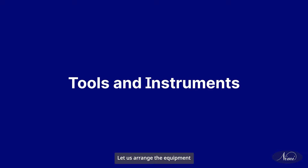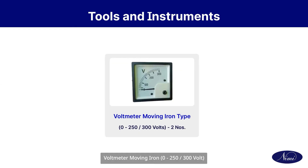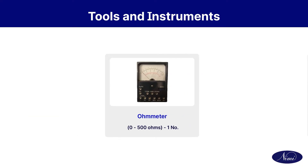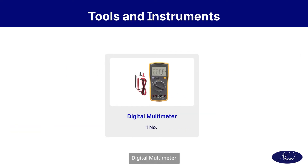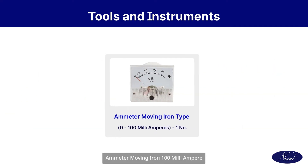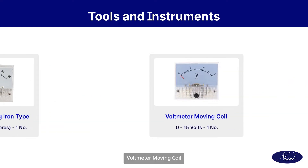Let us arrange the equipment and materials required to do this exercise: voltmeter moving iron, ohmmeter digital multimeter, ammeter moving iron, ammeter moving iron 100 milliampere, and voltmeter moving coil.